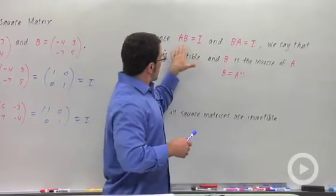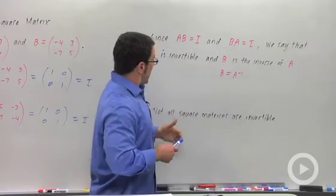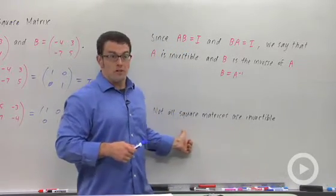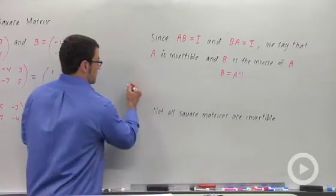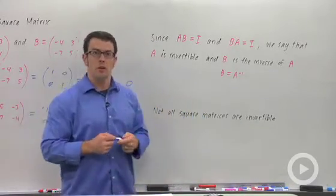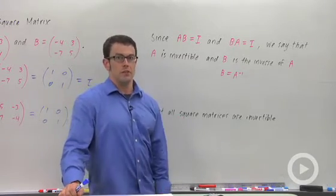Anytime we can find a matrix that does this, we call it the inverse of A. Now, you should remember, not all square matrices are invertible. And that's also like numbers. Not all numbers have a reciprocal. Zero doesn't. So, as we'll see in the future, sometimes you won't be able to find the inverse of a square matrix.